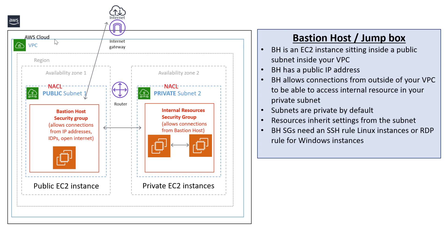A Bastion Host allows connections from the Bastion Host to access resources that are private and that are in your private subnet. Subnets can be private or public, and by default all subnets are private until they're configured to be public. To be a public subnet inside the VPC, there are a few steps that we need to complete.